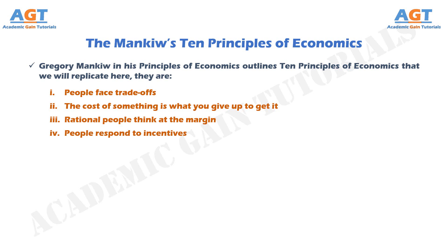Principle No. 4: People respond to incentives. Because people make decisions by comparing costs and benefits, their behavior may change when the costs or benefits change. That is, people respond to incentives. When the price of an apple rises, for instance, people decide to eat more pears and fewer apples, because the cost of buying an apple is higher. At the same time, apple orchards decide to hire more workers and harvest more apples, because the benefit of selling an apple is also higher. When analyzing any policy, we must consider not only the direct effects but also the indirect effects that work through incentives. If the policy changes incentives, it will cause people to alter their behavior.